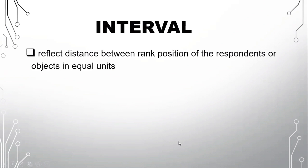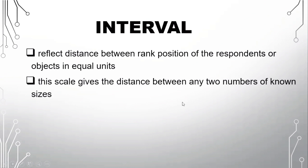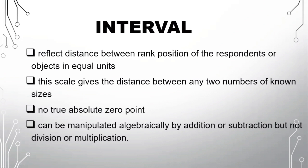Next level of measurement is the interval scale. We reflect distance between rank position of the respondents or objects in equal units. This is defined as the scale which gives the distance between any two numbers of known sizes. It has no true absolute zero point and can be manipulated algebraically by addition or subtraction but not division or multiplication. So the most important thing about interval scale is it has no true absolute zero point.